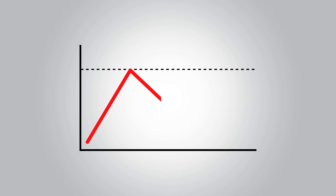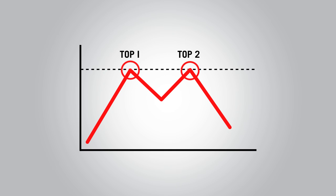A double top is a term used for technical analysis that depicts the rise of a currency price, a drop, and then another rise to the same level before dropping off again. The double top usually indicates a trend reversal in an up-trending market. The chart shown here shows a double top where the price level hit two peaks, then dropped off.